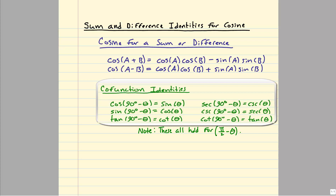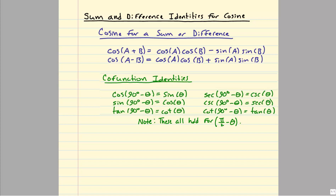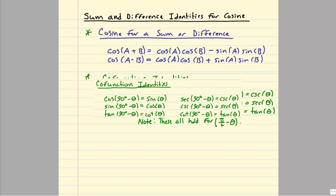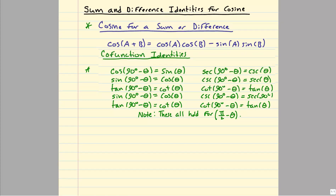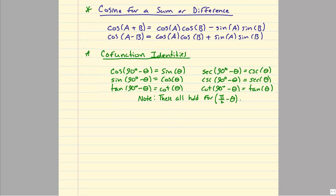We're going to be learning some new identities in this section and adding them to our list. We're still looking at the reciprocal identities, the Pythagorean identities, the even-odd identities, everything from the last section as well. With that note card you're making—it should actually probably be a note page now—we need to add these as well. These are the cosine sum or difference identities and the cofunction identities. Let's go ahead and look at the cosine sum or difference and make a couple notes before we start working problems.